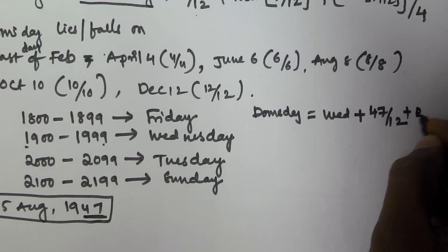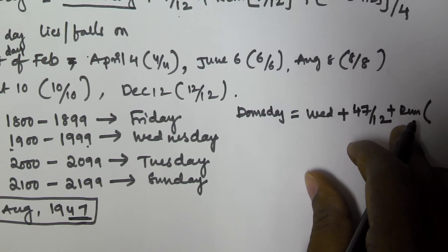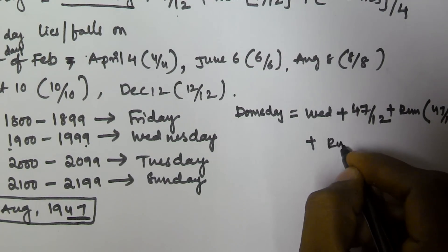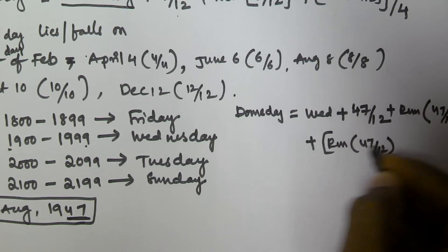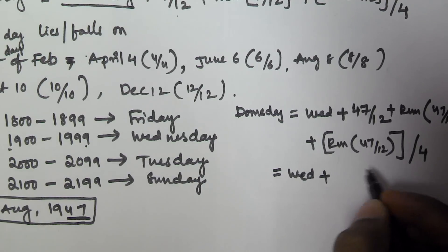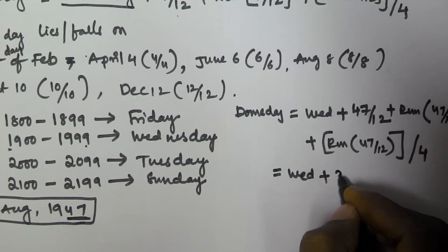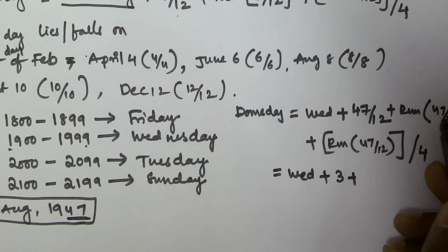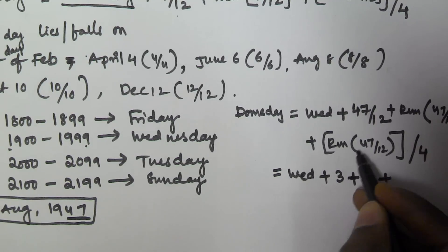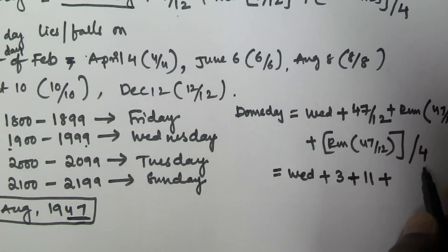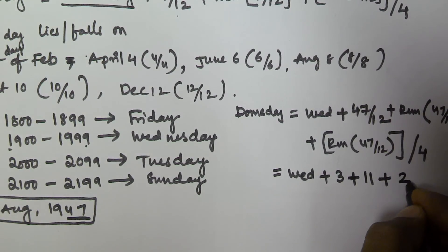Plus the remainder of 47 by 12 — we divide 47 by 12, take the remainder, and then divide that remainder by 4. So 47 by 12 gives us 3 (integer only). The remainder of 47 by 12: 3 times 12 is 36, so the remainder is 11. Then 11 by 4 gives 2-point-something, so we take 2.